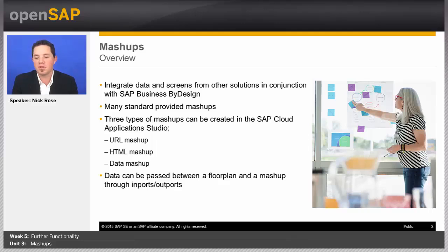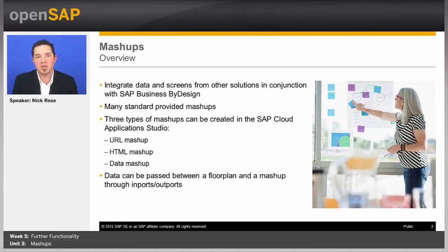There are some other things we're going to be able to do here, such as creating what are called port type packages and mashup bindings. We'll also have our content as part of our solution in the SAP Cloud Application Studio. That way we can actually deploy it to other tenants, which if we did something from the front end, we would not be able to do.